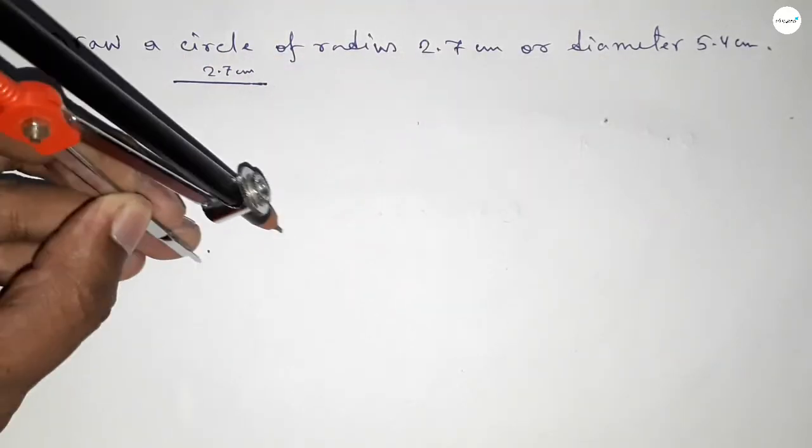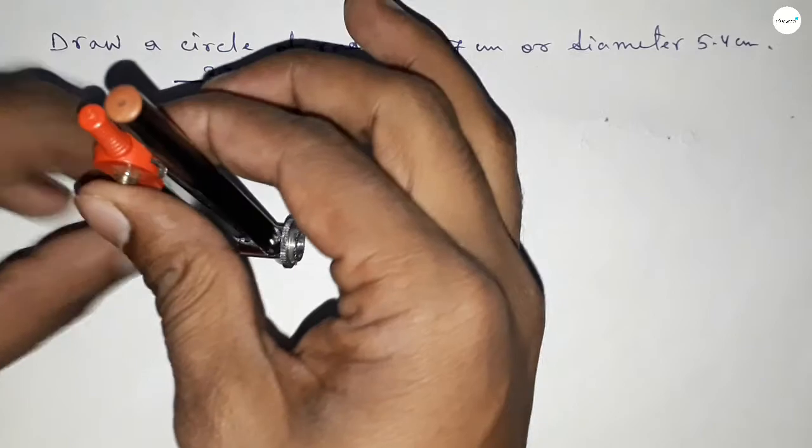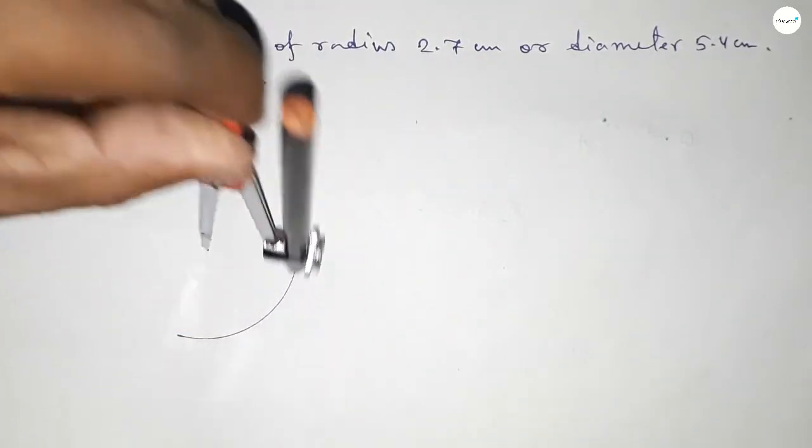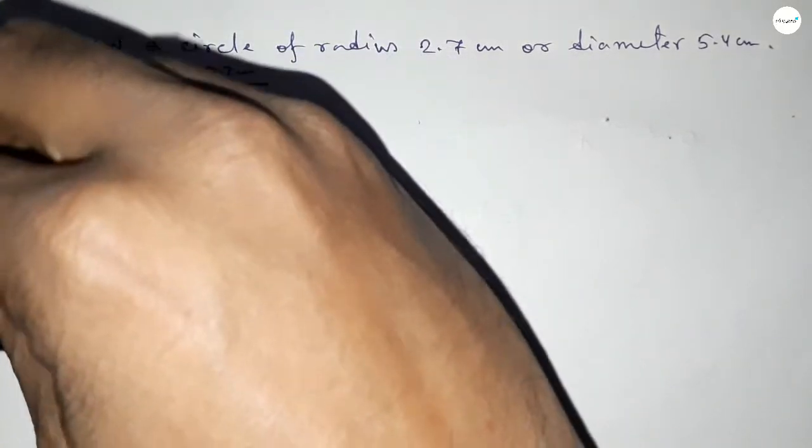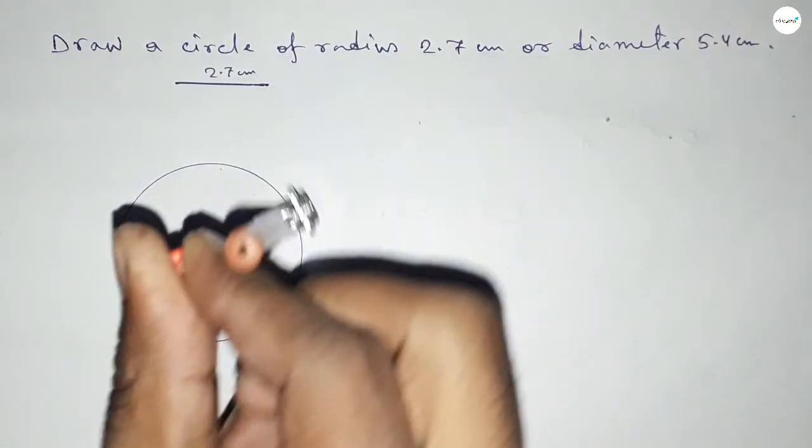And putting the compass on this point. Now drawing an arc by this way, which represents a circle with radius 2.7 centimeter.